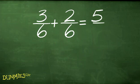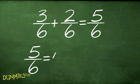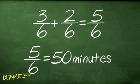Second, add or subtract the numerators. Leave the denominators alone. Finally, reduce the answer if needed. Five-sixths can't be reduced, so you have your answer. Jim played for five-sixths of an hour, or 50 minutes.